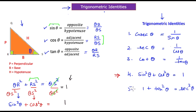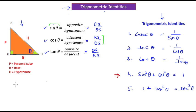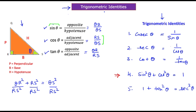Once again we use the Pythagorean theorem: QR² + RS² = QS². Instead of dividing by QS² as before, we divide the whole expression by RS². QR divided by RS is tangent theta, so QR²/RS² becomes tan²θ. RS divided by RS equals one.